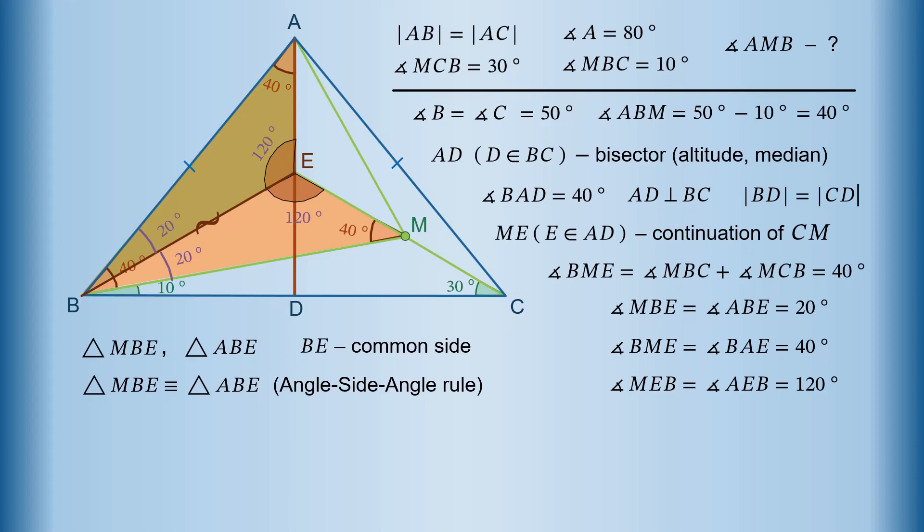Consequently, sides MB and AB have same length. Now let's remove all the additional construction, all that is no longer needed, as we know something we were unaware at start. Since MB and AB have same length, triangle AMB is isosceles, and we know its apex angle. Angle ABM equals 40 degrees.